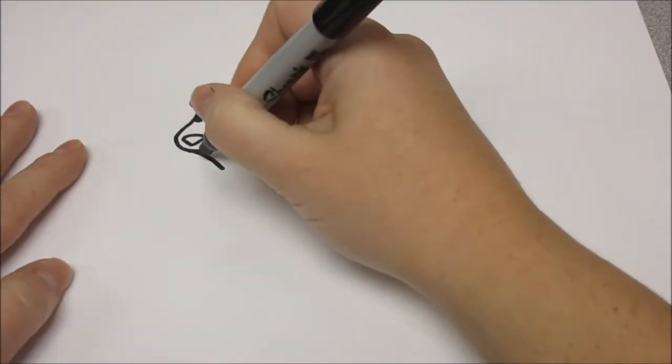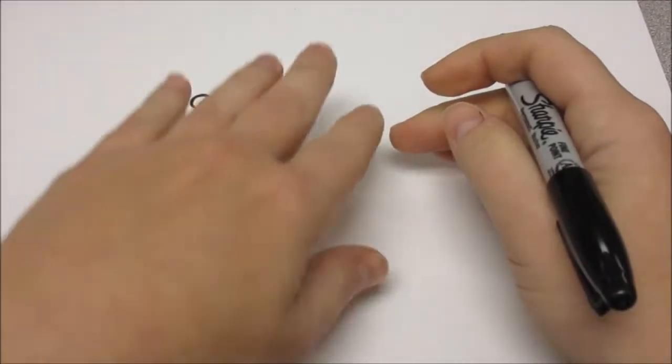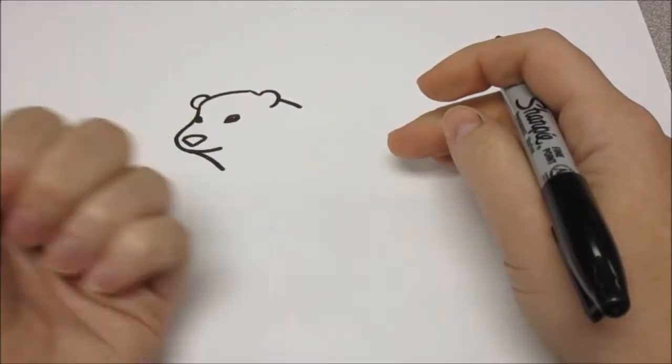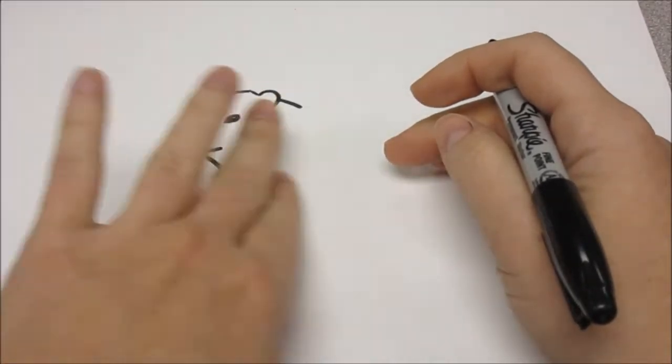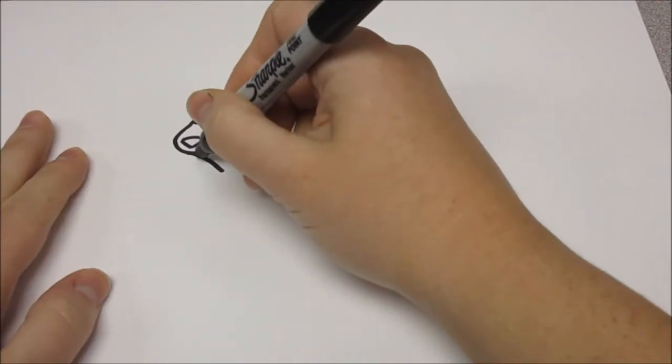Okay, now this bear, he's turning his head this way, but his body is going to be behind him. So we're going to make his front legs first.